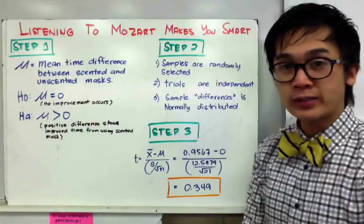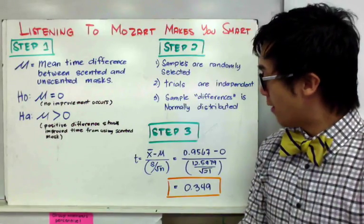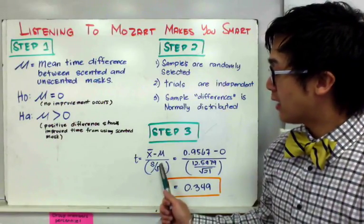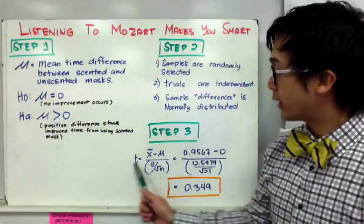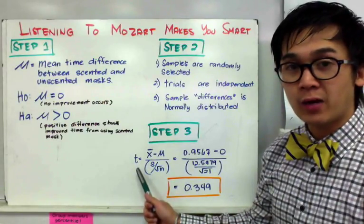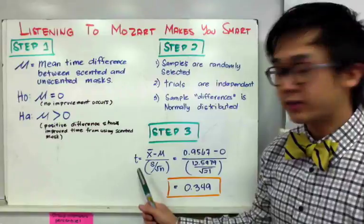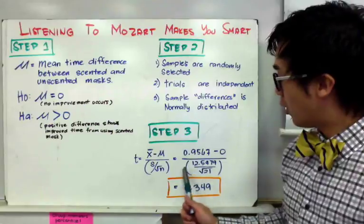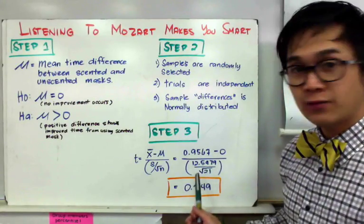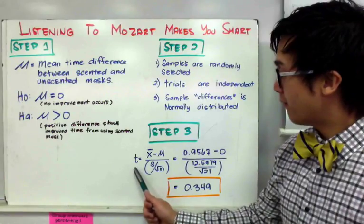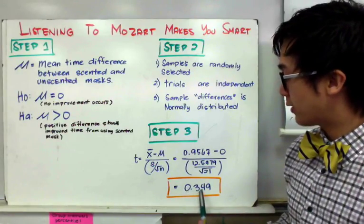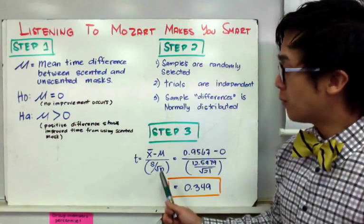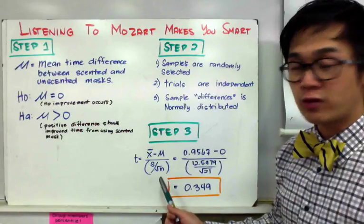For step three, our test statistic for one sample t-test is t = (x̄ - μ) / (s / √n). We're using the t distribution because we don't know the population parameters. This gives us (0.9567 - 0) / (12.5479 / √21) = 0.349. This is our test statistic that we'll use to find our p-value.